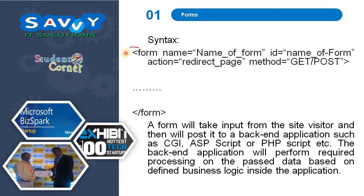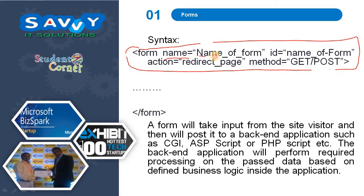The syntax for a form is: form name — we need to specify the name; id — we need to specify the name of the form; action — we need to give the redirect path; method — we need to use either GET or POST. In between we need to use input tags, select tags, or textarea tags, and finally we end with the form closing tag. A form takes input from the site visitor and posts it to a backend application such as CGI, ASP script, or PHP script.